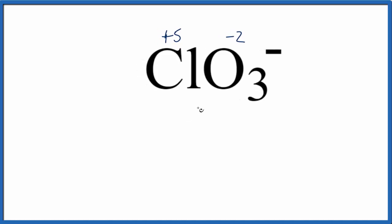You could also figure it out algebraically, because we know everything's going to add up to be minus one. And if we didn't know what the Cl was, we could call that X. Plus, we have minus two for oxygen, but we have three of them. And now all we need to do is solve for X. So X minus six equals minus one.